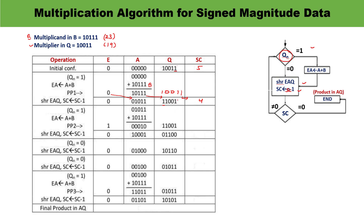Since the sequence counter is not 0, the operation continues. We check the value of QN again — it is 1. So again we have to perform A plus B. We add the current content of A with B, getting the new result. Then we perform a shift right: one bit is shifted right, and one bit is shifted out. The sequence counter is decremented by 1, now reaching 3.